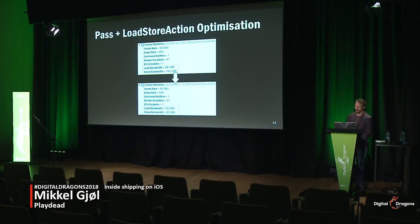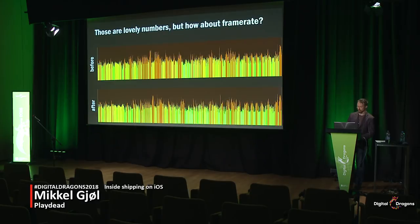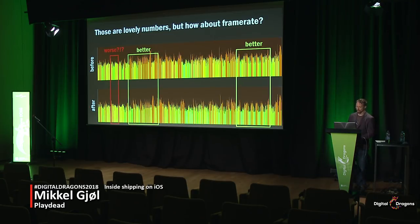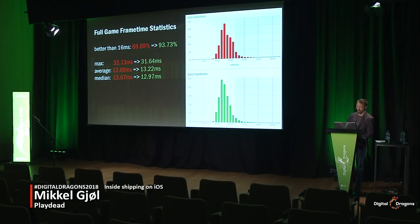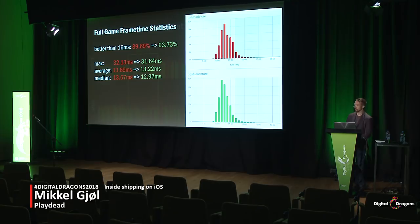You can also see the load and store bandwidth and look at that. After doing all the reshuffling of passes and load/store optimization, we roughly halved the load bandwidth and got close to halving the store bandwidth. Looking at the full-game graph, all in all it looked better. My flight here was delayed so I had time to actually run some stats — and it did significantly improve things, around a couple of milliseconds improvement. It's not too much work, so I'd say that pays off.